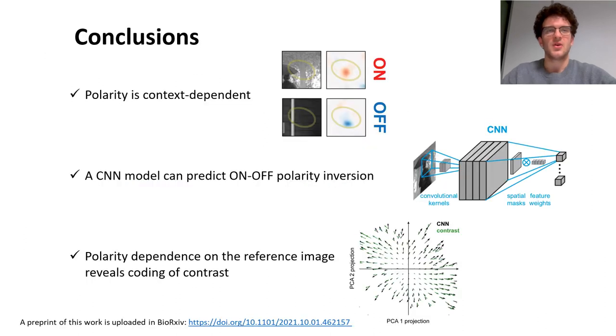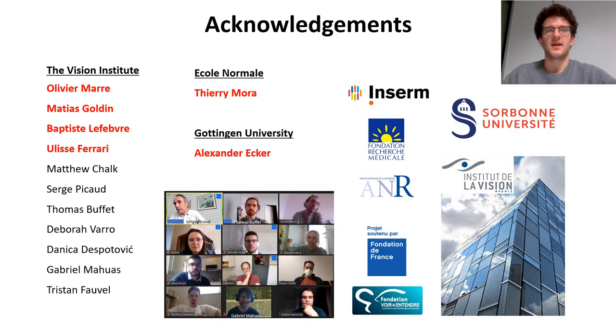To conclude, we showed that the ganglion cell polarity is context-dependent when probed with natural scenes, that a CNN model can effectively reproduce the ON-OFF polarity inversion, and that the polarity dependence on the reference image reveals coding of contrast. If you are interested to know more, a preprint is available on bioRxiv at the link at the bottom of this slide. With this, I want to thank all the members of my team, especially the other authors of this work highlighted here in red. Thanks for your attention.